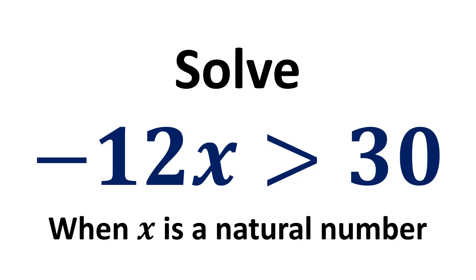In this video, we learn to solve inequality minus 12 times x is greater than 30 when x is a natural number.